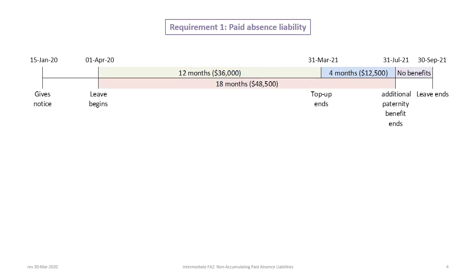Before we get into calculating the absence liability and doing any journal entries, let's review the timeline for this problem. On January 15th, 2020, Mr. Tuvok comes to the owner or president of the company and provides notice that he plans to take paternity leave, but that paternity leave does not begin until April 1st, 2020. So there's a gap where nothing happens. Then Mr. Tuvok goes on paternity leave and is entitled to some basic government benefits, during which time he also receives a top-up.